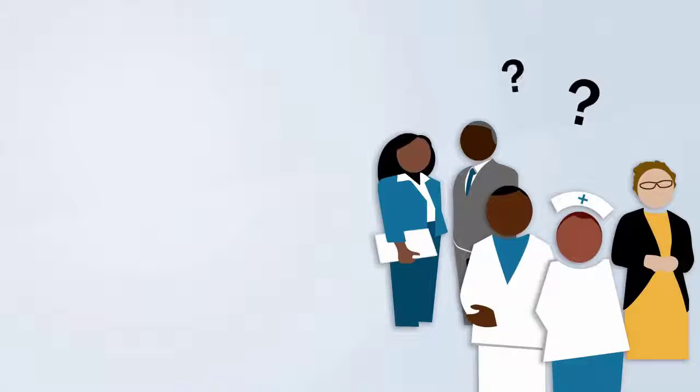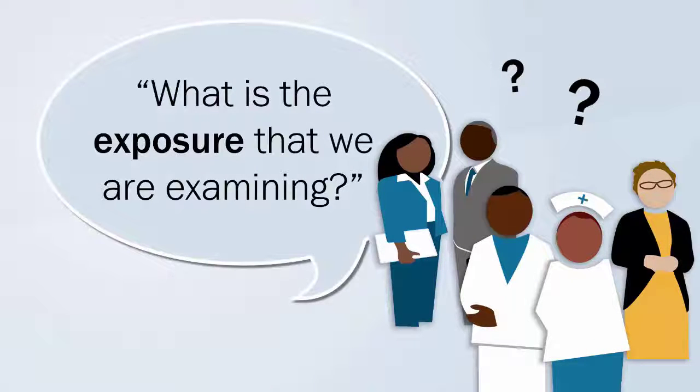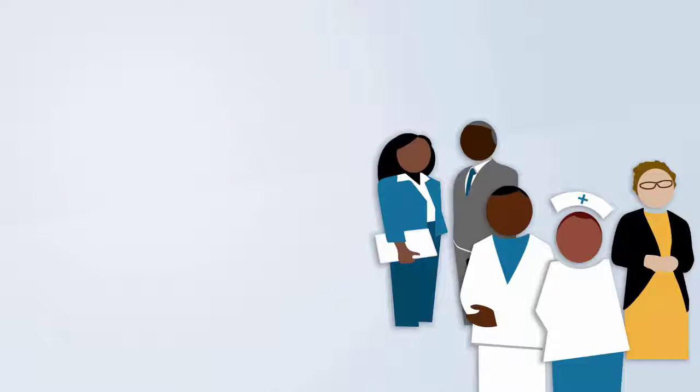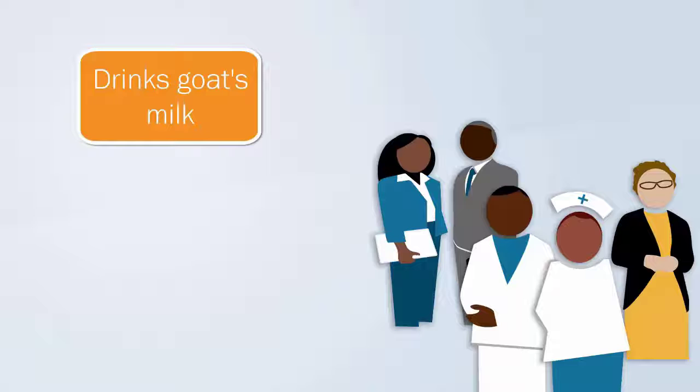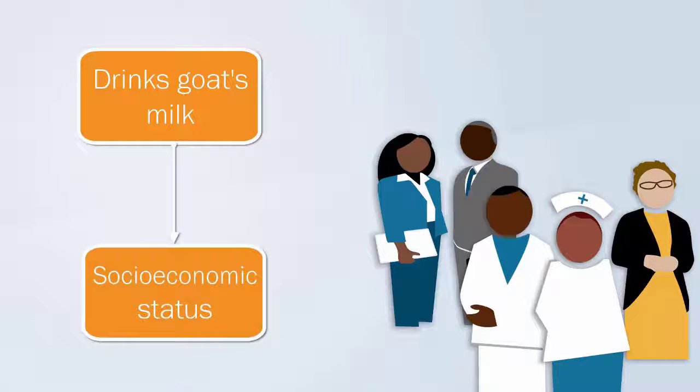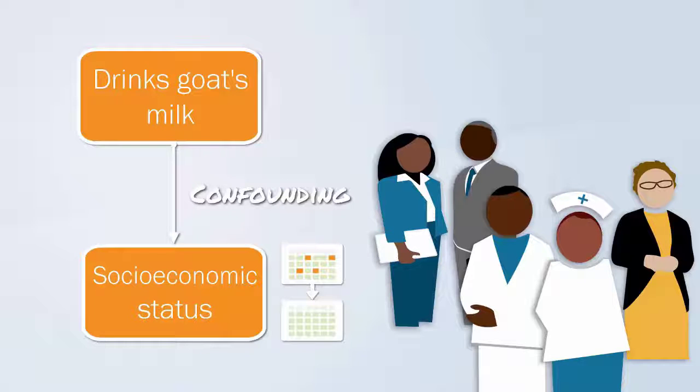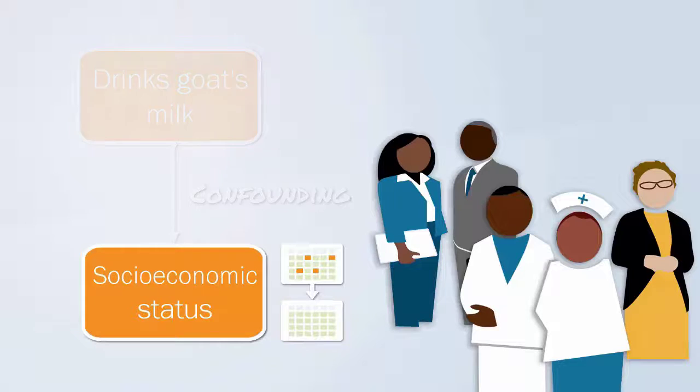We must always ask ourselves, what is the exposure that we are examining? In this example, the exposure of interest is goat's milk. This exposure has been confounded by socio-economic status. Drinking goat's milk is related to socio-economic status. And if we adjust for socio-economic status in the analysis, the effect of drinking goat's milk will disappear.